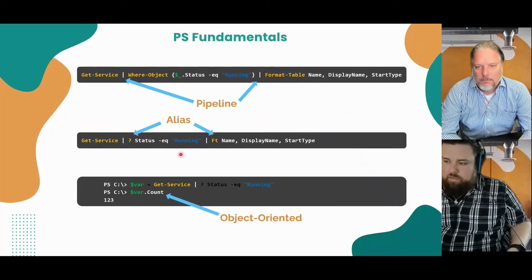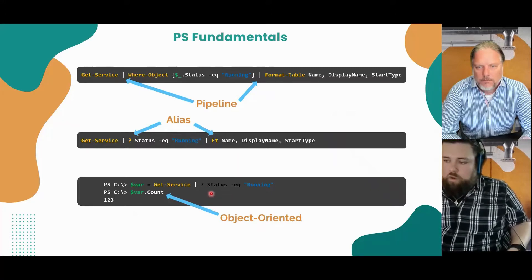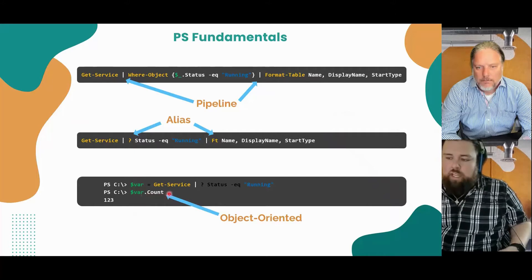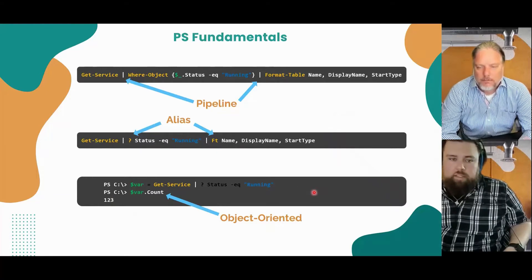On the next line, we see the object-oriented approach that Marcus talked about. Here we're getting a service with a status of 'running', which returns a collection of services rather than just a single service. With this object-oriented property-dot-property approach, we can see how many services were returned by that command.